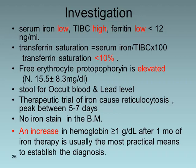Serum iron is low and iron-binding capacity is high, with low ferritin (less than 12 ng/mL), transferrin saturation reduced to less than 10%, and elevated free erythrocyte protoporphyrin. One should look for occult blood in stool and check lead levels. A therapeutic trial of iron causes reticulocytosis peaking between five and seven days; an increase in hemoglobin of more than 1 g/dL after one month of iron therapy is the most practical means to establish the diagnosis.